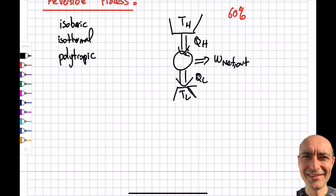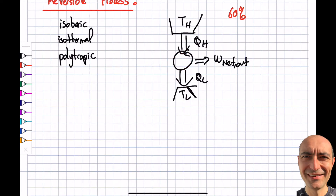A reversible process is a process that can be reversed, as the name suggests. While doing that, there will be no change to either the system or the surroundings. Let's pick a system — it goes through a process from state one to state two and back to one — and throughout this, the system as well as the surroundings stay exactly the same.